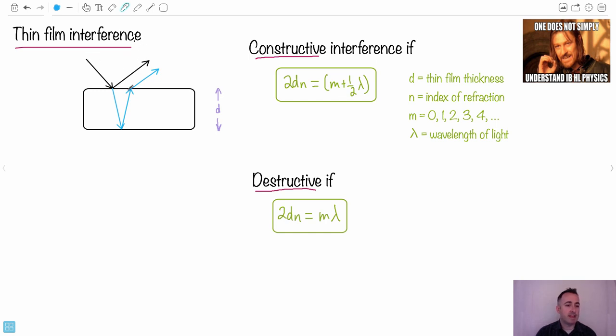So here, if we have a thin film, what we have is a thin film. We'll say the thickness of it, we'll call it D. So that will be measured in meters. I love this. One does not simply understand IBHL physics. That's from Lord of the Rings, right? This guy always dies in movies, doesn't he? Or shows. Like in Game of Thrones in the very first season, right? But anyway.